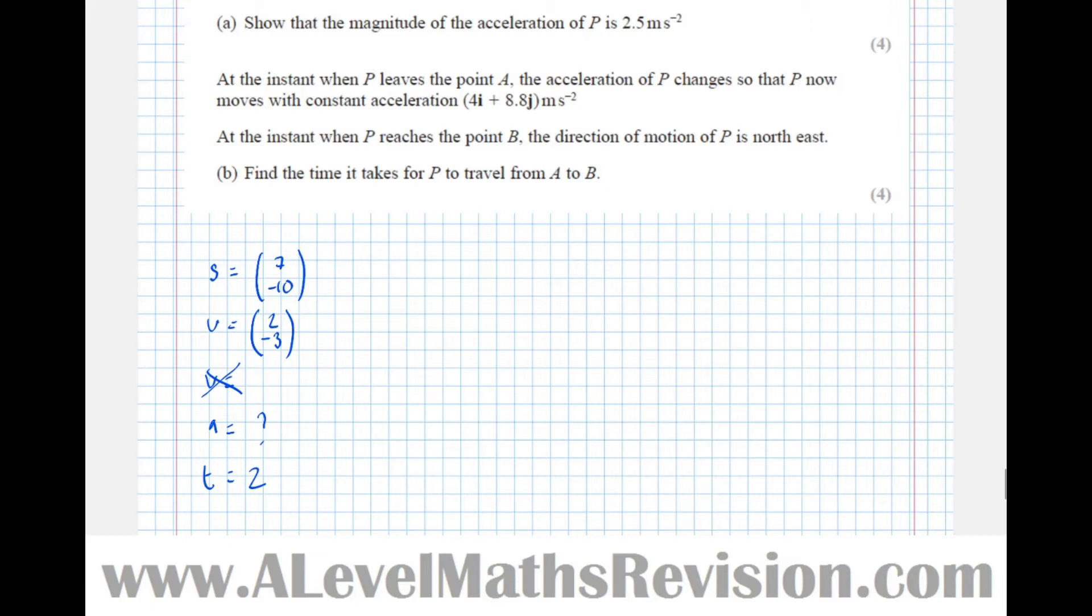We need to take the SUVAT equation that links S, U, A and t, which is S equals UT plus a half A t squared. So 7 minus 10 equals UT, so 2 minus 3 lots of 2, plus a half A, which is a vector, times 2 squared, which is a scalar.